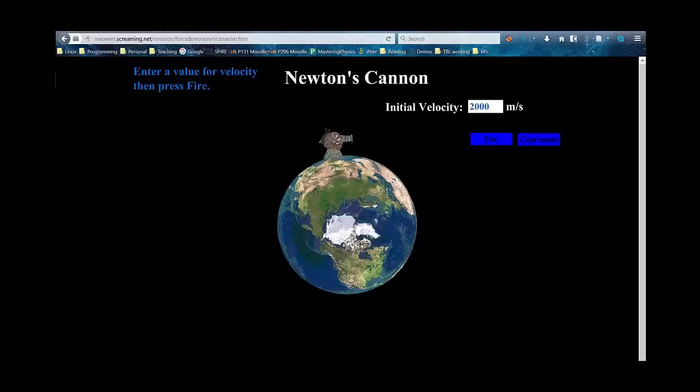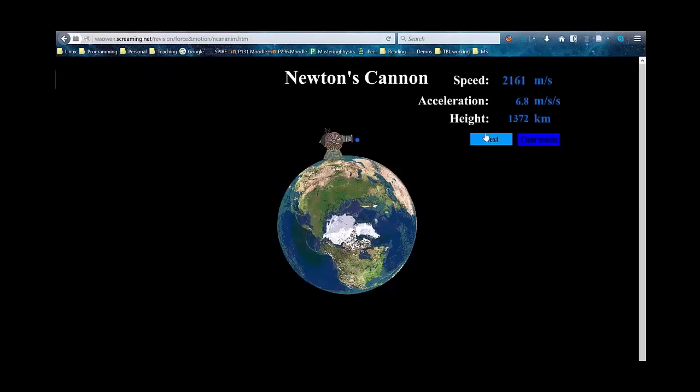So bringing up the little applet, here is Newton's experiment that he did in his head. Imagine you built a very large cannon on the Earth, and you fire a little cannonball out of it. We are going to fire the cannonball at 2,000 meters per second. When I fire the cannonball, the cannonball comes out of the cannon and falls to the Earth, just as you might expect.